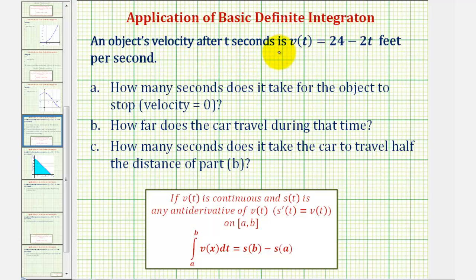An object's velocity after t seconds is v(t) = 24 - 2t feet per second. Part A: How many seconds does it take for the object to stop, meaning when is the velocity equal to zero?